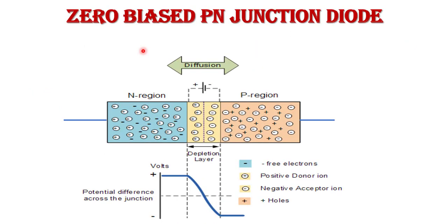First is zero bias or unbiased PN junction. In case of an unbiased PN junction, we take P-type and N-type semiconductor material and join them to form the PN junction. When the PN junction is formed and we do not apply any external voltage across the terminals, the device is said to be unbiased or zero bias. In this case, the N-type region has majority carrier electrons and the P-type region has majority carrier holes.